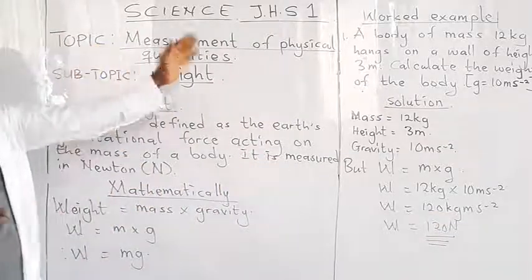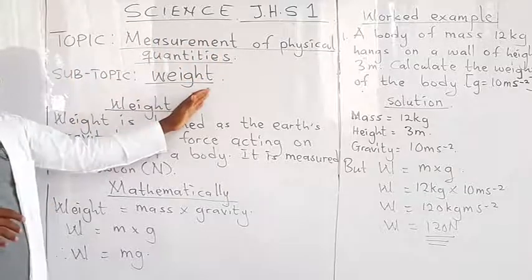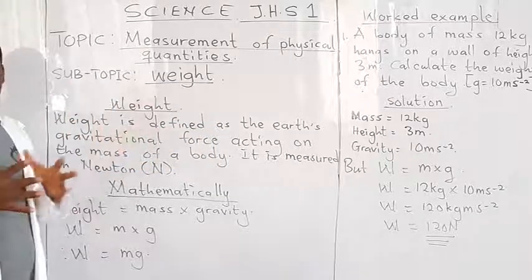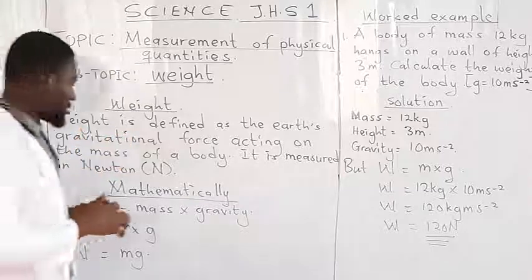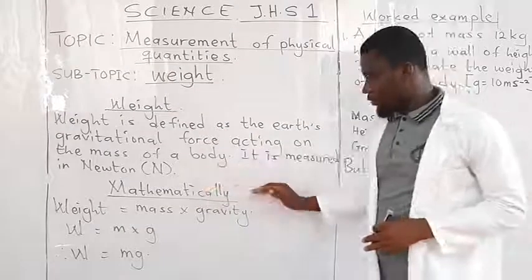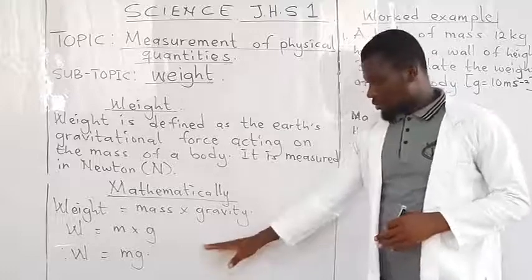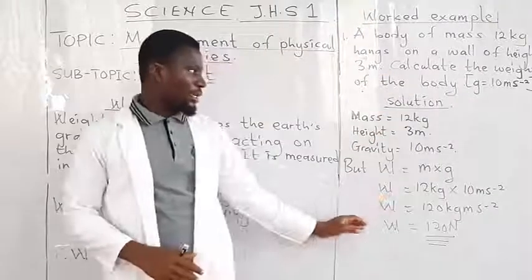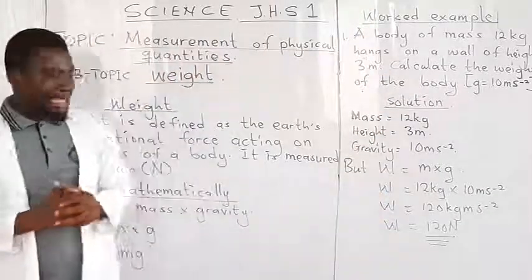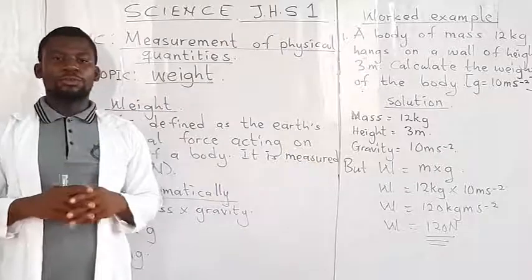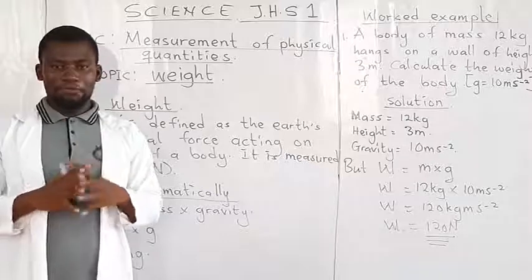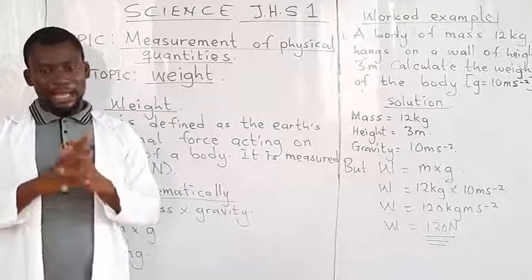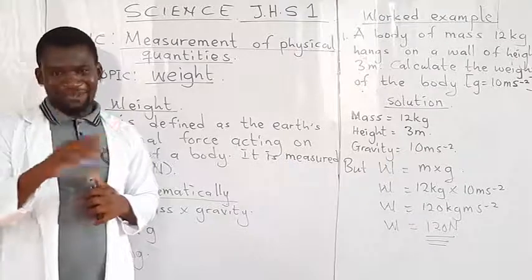We began with measurement of physical quantities and then we looked at weight. So we also defined weight as the earth's gravitational force acting on the mass of a body. So don't forget the mathematical expression of weight as well: W = mg. And then the worked example also given. Follow this and your assignment on this particular topic will be given to you on our Google platform where you have to do everything and then submit it nicely. Are you okay? Bye for now.